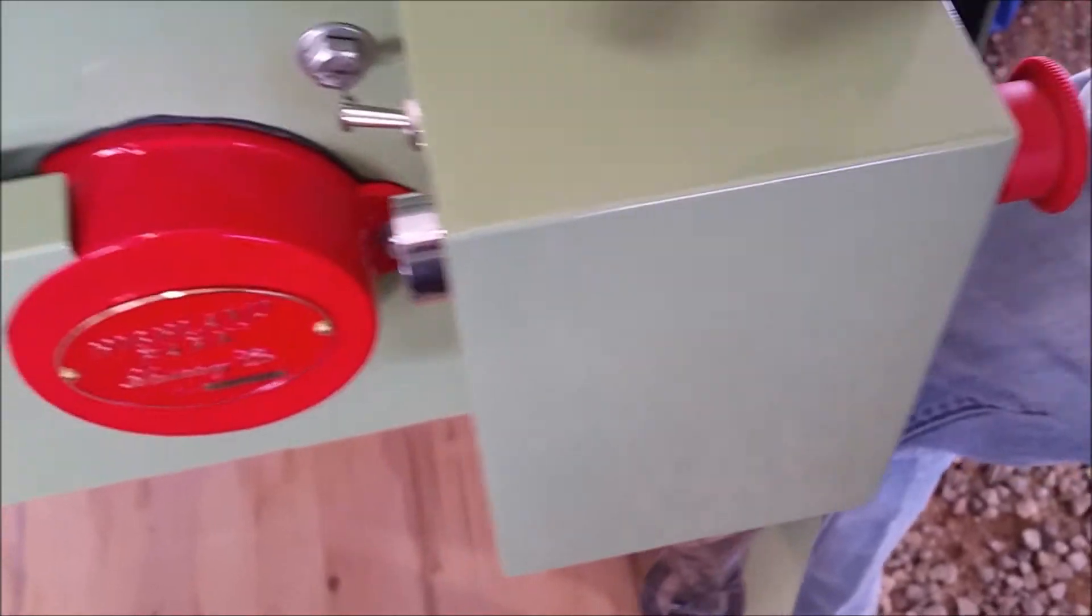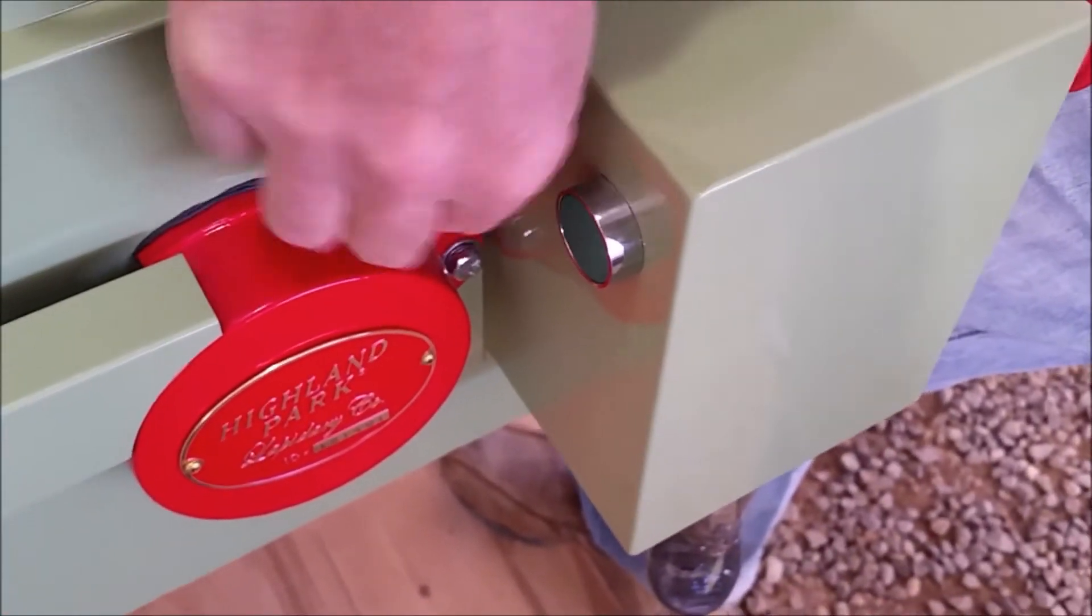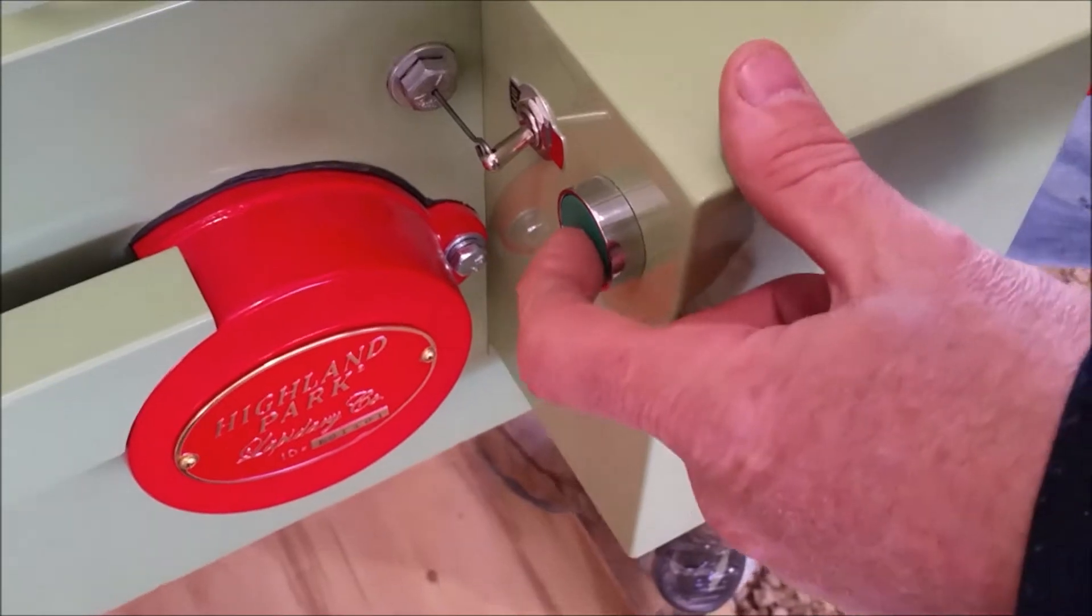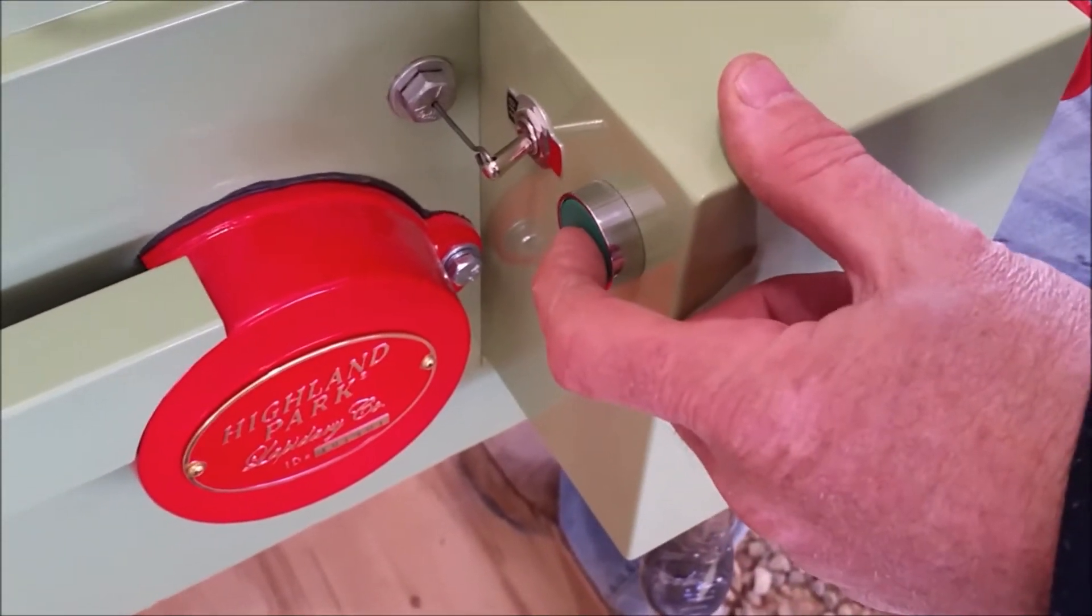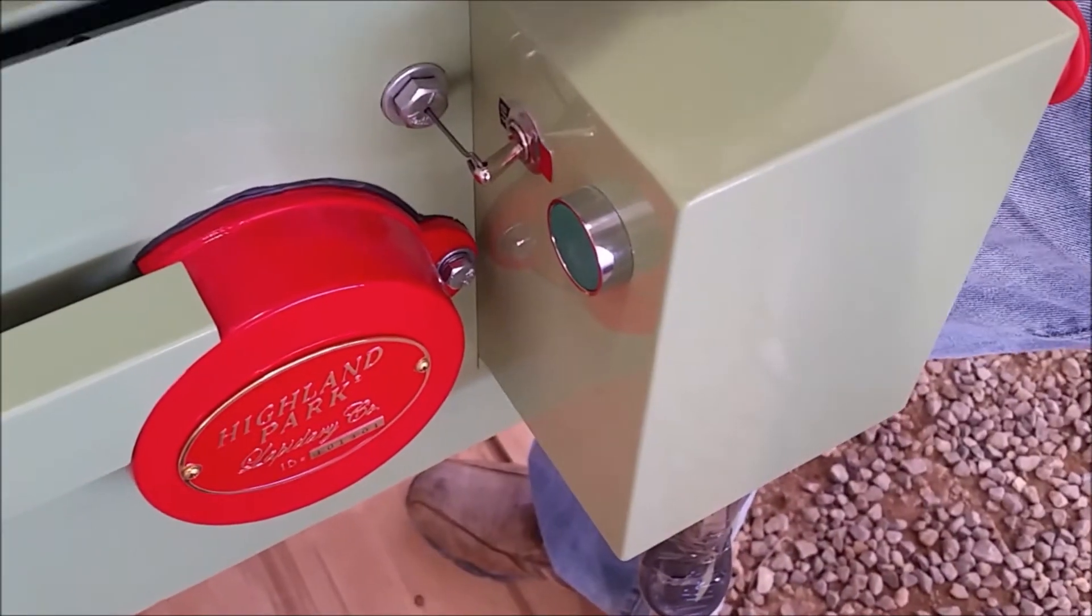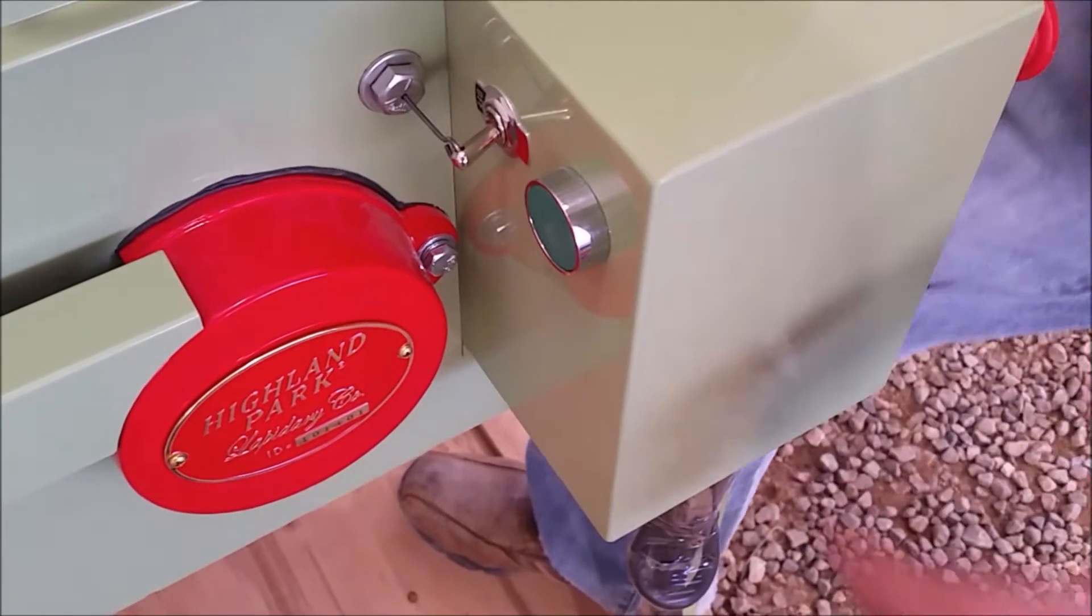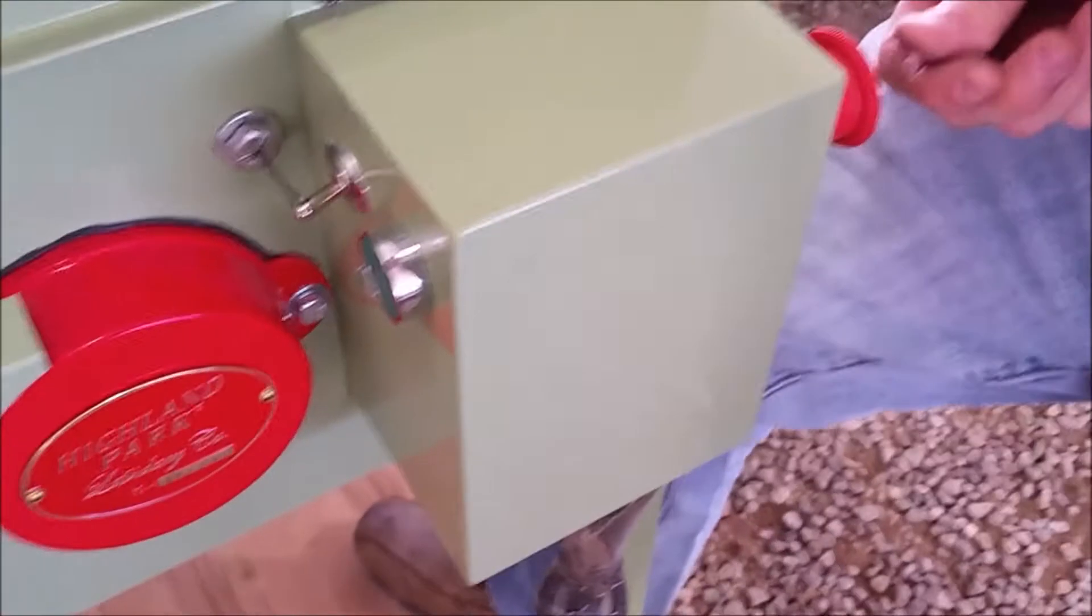Then the automatic shutoff switch we pull out and when we push this button that starts the saw. If the hood is open like that it will interrupt the circuit. There's a contactor in here.